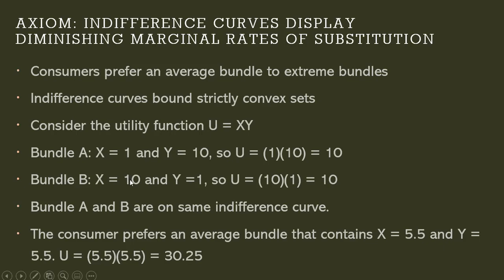So that's the average units of X in Bundle A and Bundle B. And then the average units of good Y - same thing. 10 plus 1 is 11, dividing through by 2 is 5.5. And if we plug this bundle into the utility function, the consumer gets a higher level of utility. This average bundle is preferred to these extreme bundles.